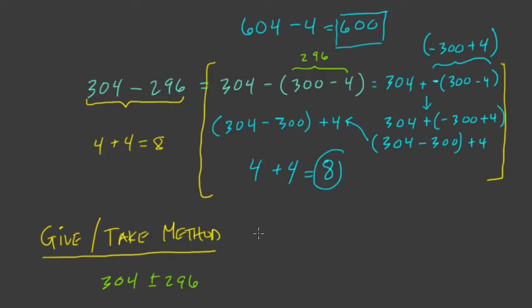If we have 304 plus 296, well, if we take 304 and subtract 4, we get 300. And if we take 296 and add 4, what do we get? 300. Add these together, we get our answer 600, which is correct.